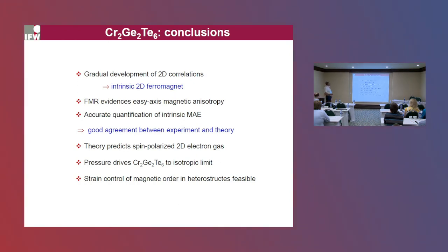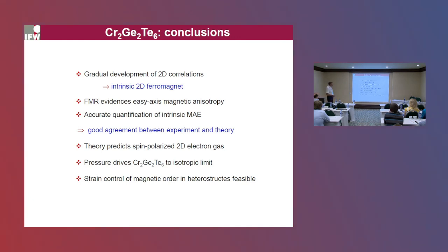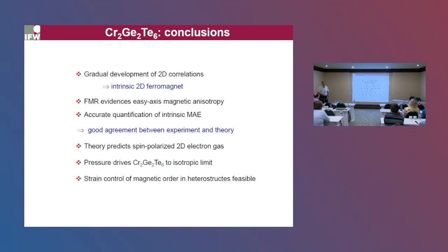In conclusion, we have shown that bulk crystals of chromium germanium telluride still exhibit properties of an intrinsic two-dimensional ferromagnet, possessing easy-axis magnetic anisotropy. We can accurately quantify its value and show that the out-of-plane easy-axis anisotropy is in good agreement between experiment and theory. Theory also predicts that if doped, one could have an almost fully spin-polarized two-dimensional electron gas. Very importantly, we found a way to tune the anisotropy in this material by pressure, and we propose that strain control of magnetic order in heterostructures should be possible. Thank you very much for your attention.